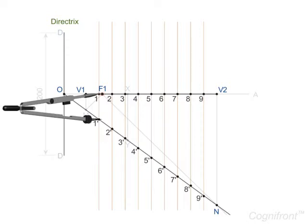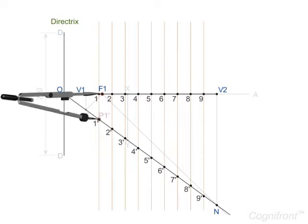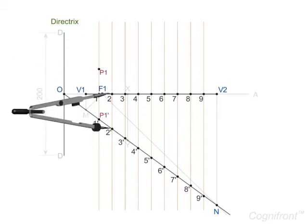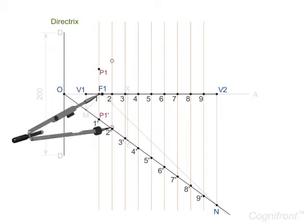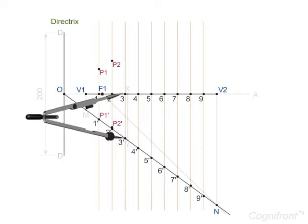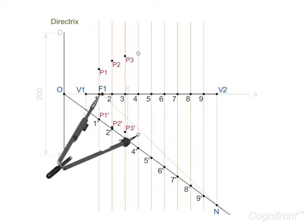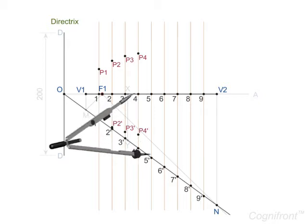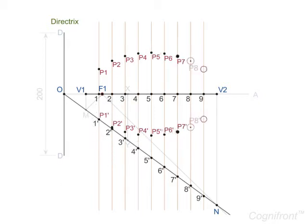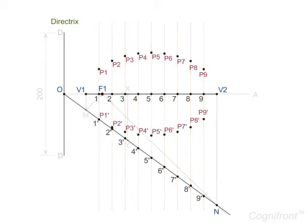With F1 as center and one dash as radius draw arcs on either side of the axis cutting the vertical line drawn through point 1 at points P1 and P1 dash. Repeat the above steps to obtain the rest of the points from P2, P2 dash to P9, P9 dash.